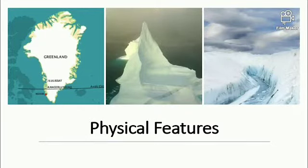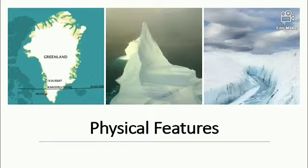Physical feature: Greenland is a plateau surrounded by mountains. 80% of Greenland is always covered with ice throughout the year. Huge pieces of ice frequently break off and float in the sea, and a major part remains under the water. Today we discussed the location and extent and physical features of Greenland.